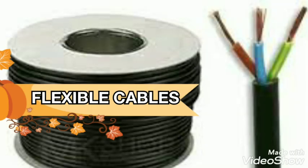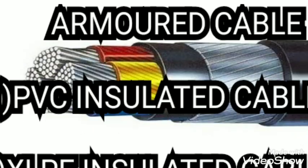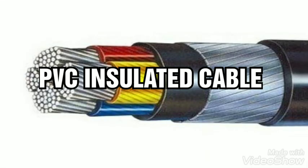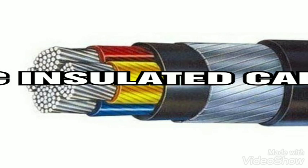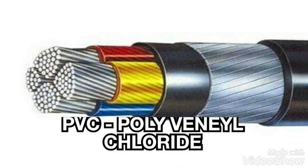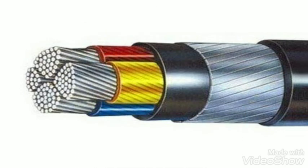The first one is flexible cable. As shown in this picture, a flexible cable has three insulated wires molded together. Armored cables are classified into two types: PVC insulated cable and XLPE insulated cable. This picture shows a PVC insulated cable.